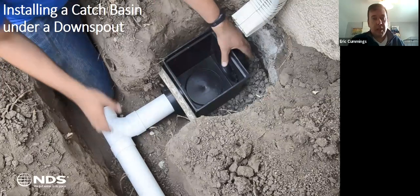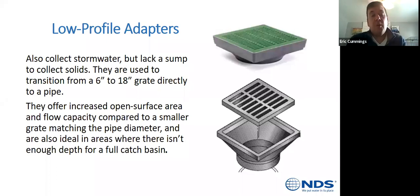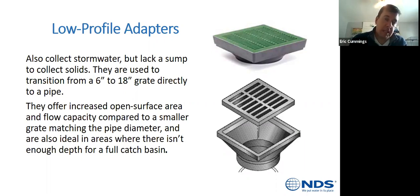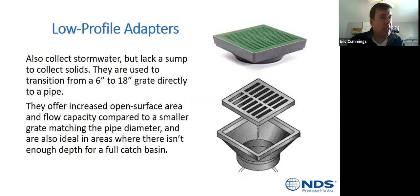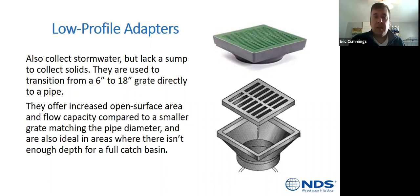Low profile adapters are basically a catch basin grate with the same flow rate as a catch basin but without the sump underneath. If you're trying to tie into a pipe two or three feet underground, a standard catch basin puts you at a fixed height for the pipe outlet. A low profile adapter gives you a lot of variability so you can set the invert at any height — very handy when you need to go really deep or match up to another pipe.